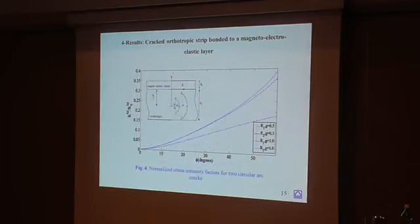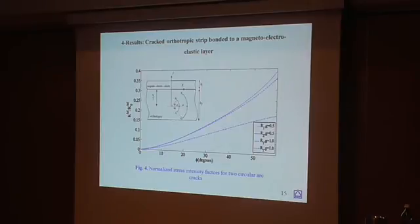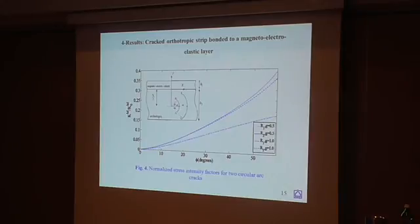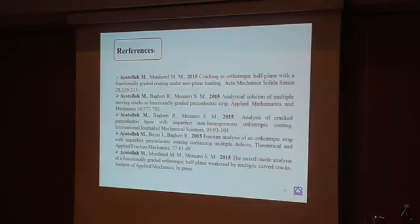In the next example, the normalized stress intensity factor is computed for two circular arc cracks as curved cracks. When the crack length p increases, the stress intensity factor increases rapidly. The effect of the orthotropic parameter G of the material is also visible. There are additional examples not shown here due to time limitations. Some references from journals are cited, highlighting the variety of solved problems using the distributed dislocation technique.